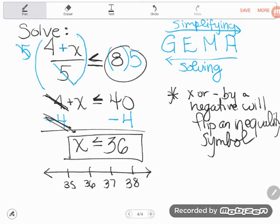If x is less than or equal to 36, you're going to use a solid dot right on 36. That's because of the equal symbol. This little line underneath tells me that it's okay for x to be equal to 36. And that's also what a solid dot tells me.